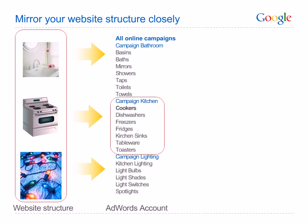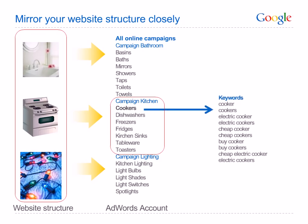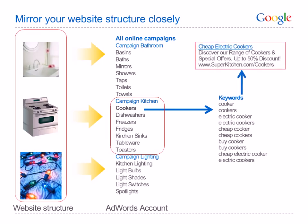In the Cookers ad group, a list of targeted keywords covers the different variations of the cooker product, such as 'buy cookers' or 'electric cookers'. In addition, in the Cookers ad group, keywords are linked to a specific ad text for cookers. The appropriate landing page should also direct the user to Superkitchen's range of cookers.